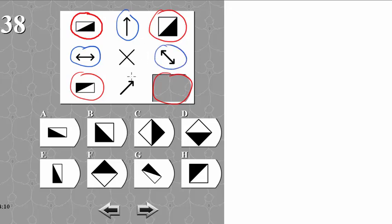These are our operators. We notice that there are two kinds of operators: there is the single arrow one and the double arrow one. Double arrow, double arrow, single arrow, single arrow.